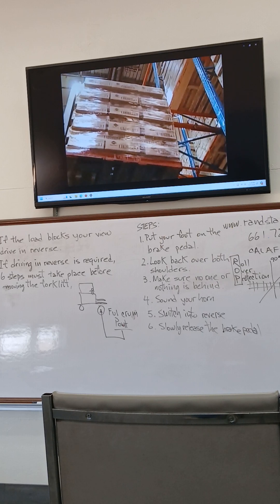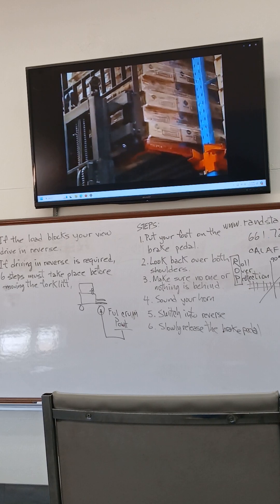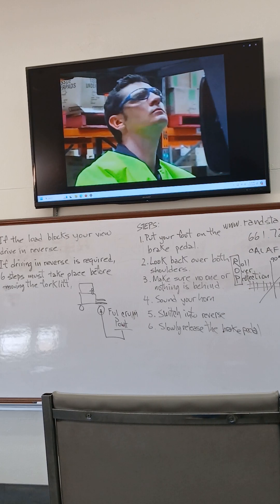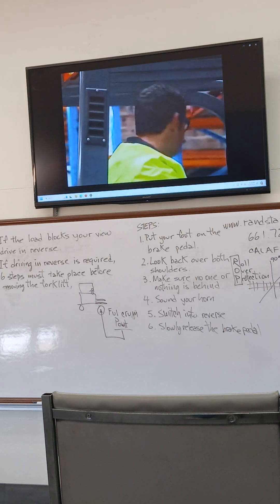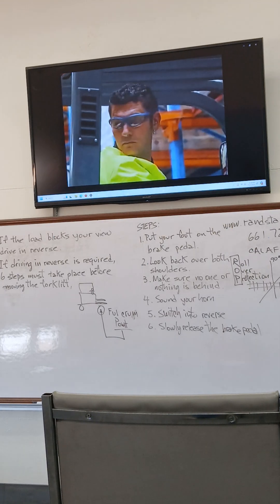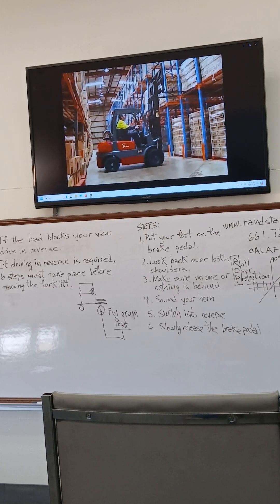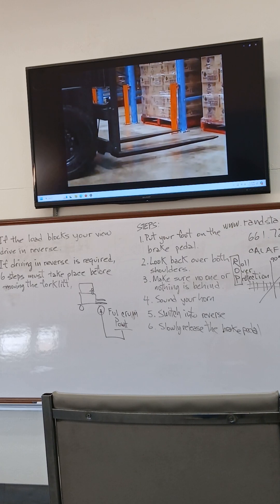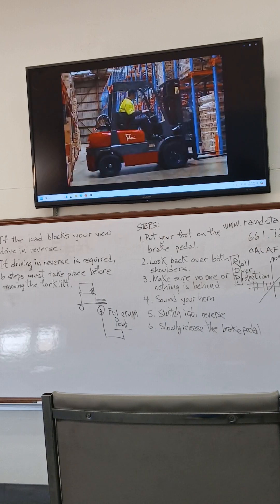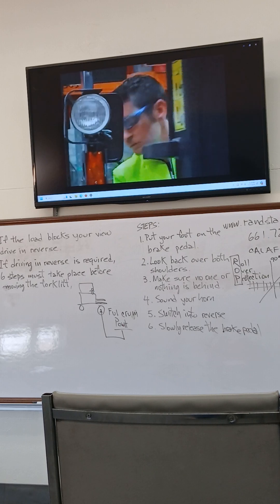Tilt the mast to level and then move forward over the spot where the load will be placed. Lower the forks and visually verify that the load is stable. Before backing up, check behind on both sides for pedestrians and other traffic. Lower the forks to the travel position, just above ground level. Again, check behind and on both sides for pedestrians or other traffic before traveling.